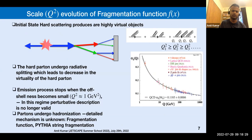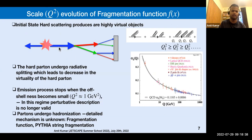Next I would like to talk about the Q² evolution of the fragmentation function. The hard parton produced in the initial-state hard scattering is highly virtual and undergoes radiative splittings.